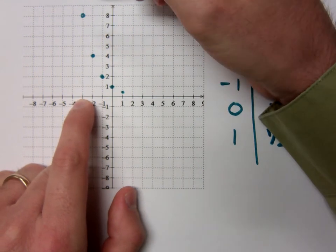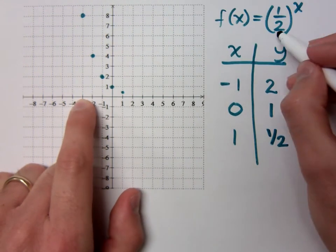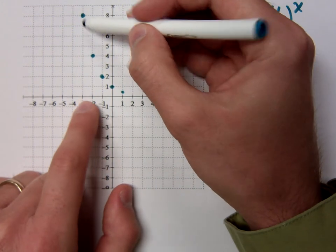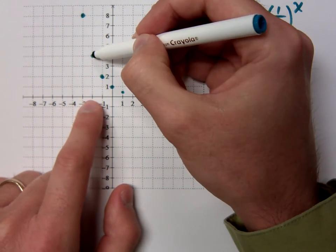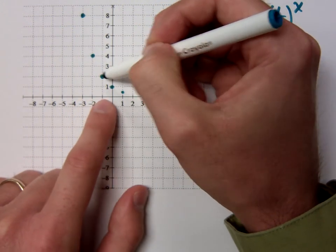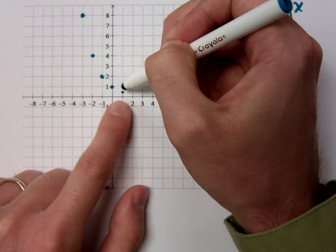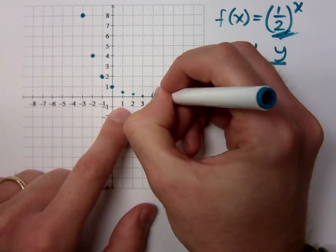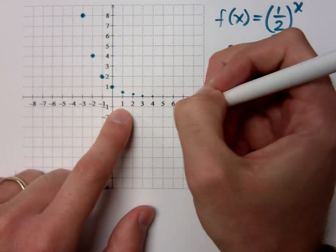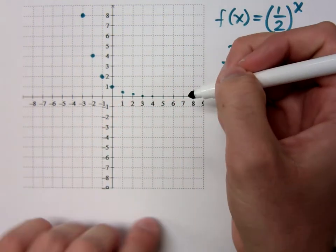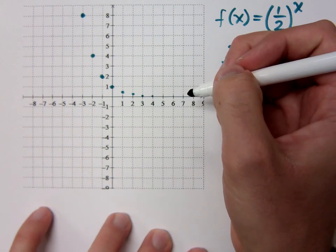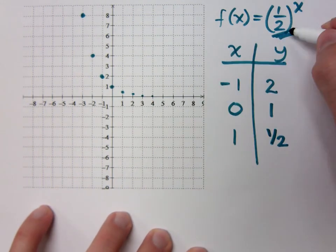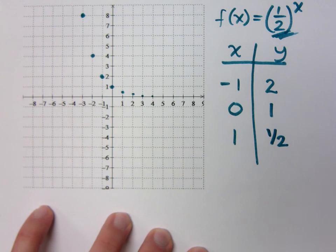Now watch what happens as I go to the right. My base is 1 half. What's half of 8? 4. What's half of 4? 2. What's half of 2? 1. 1 half. 1 fourth. 1 eighth. And so on. You get 1 or 2 points here, and you know what the base is, you can get everything else.